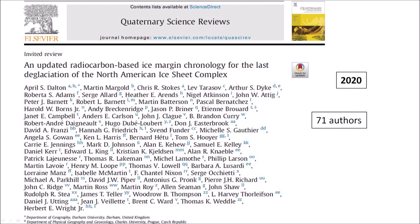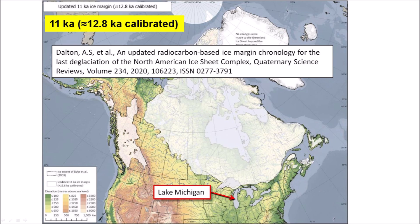A paper with 71 authors published by Dalton in 2020 provides an updated radiocarbon-based ice margin chronology for the last deglaciation of the North American Ice Sheet Complex. The paper provides images of the ice coverage at various times during the Ice Age. This image shows that approximately 12,800 years ago there was no ice on Lake Michigan — the Michigan Peninsula was ice-free. This lack of ice coverage has been used as an argument that the Carolina Bays could not have originated from secondary impacts of ice boulders ejected by an impact on the Laurentide Ice Sheet 12,900 years ago, because there was no ice that could have been ejected.